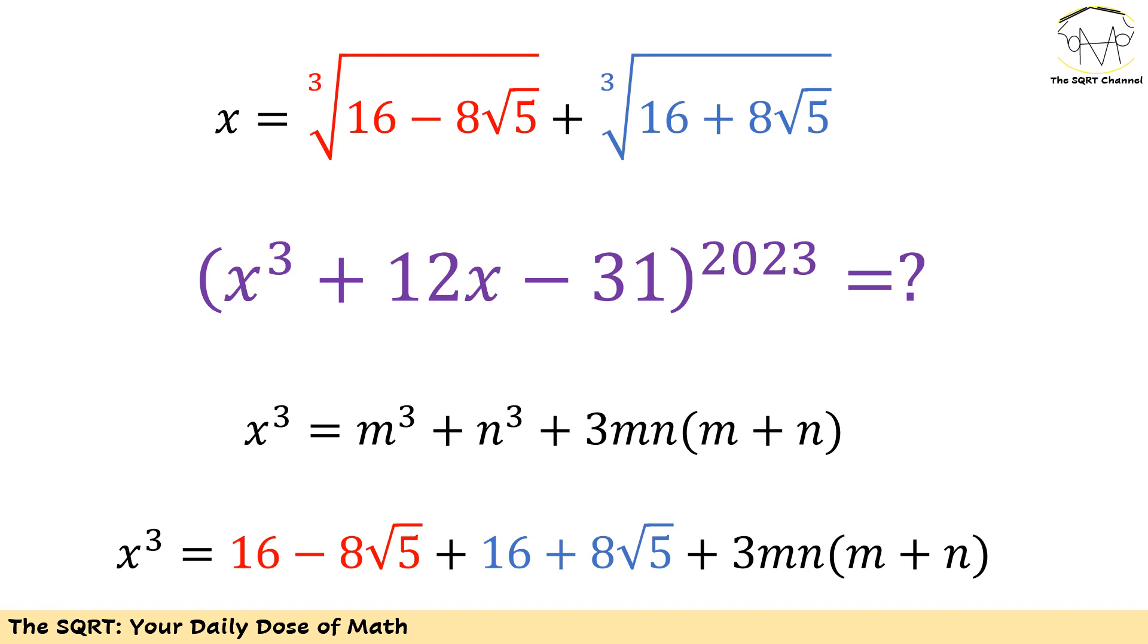To solve this problem, I'm going to take power of 3 of x. The reason is we need to evaluate an expression that has x to the power of 3. However, there is something that we need to understand first. We have an identity here. Let's say that x can be written as m plus n, then x to the power of 3 is going to be m cubed plus n cubed plus 3 times mn times m plus n.